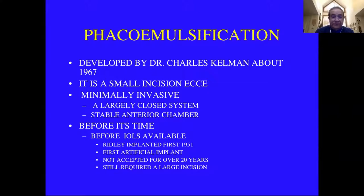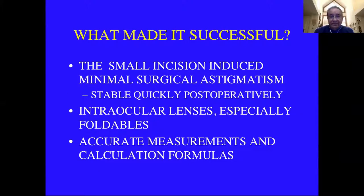Ridley implanted the first lens in 1951, had mixed success, reported it about three or four years later, and was just reviled. There had never been an artificial implant placed in the body that worked, and intraocular lenses were not accepted for more than 20 years. Even then, they were rigid lenses that still required a large incision, so there was very little advantage to doing FACO. What finally made it successful was that the small incision induced minimal surgical astigmatism, it became stable quickly, and then foldable lenses came in the mid-70s along with accurate measurements and calculation formulas.